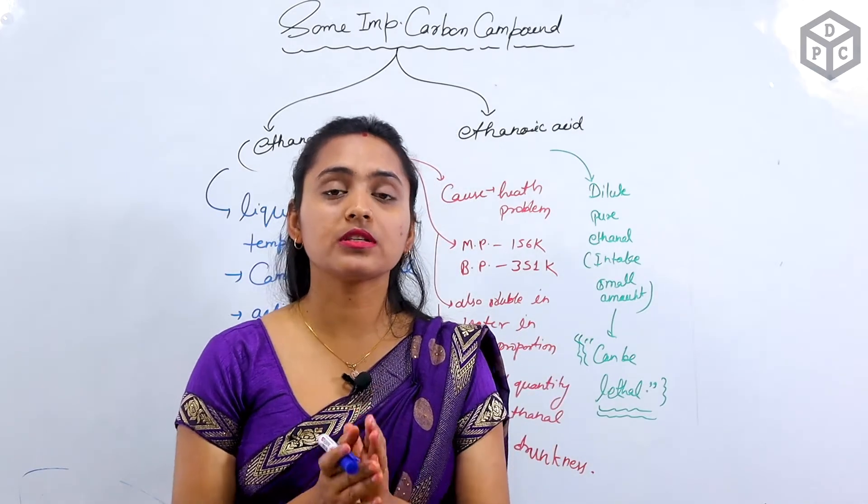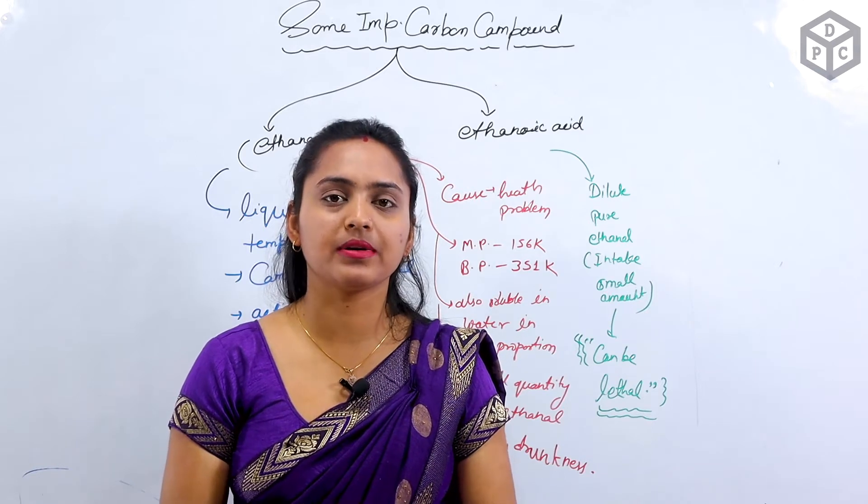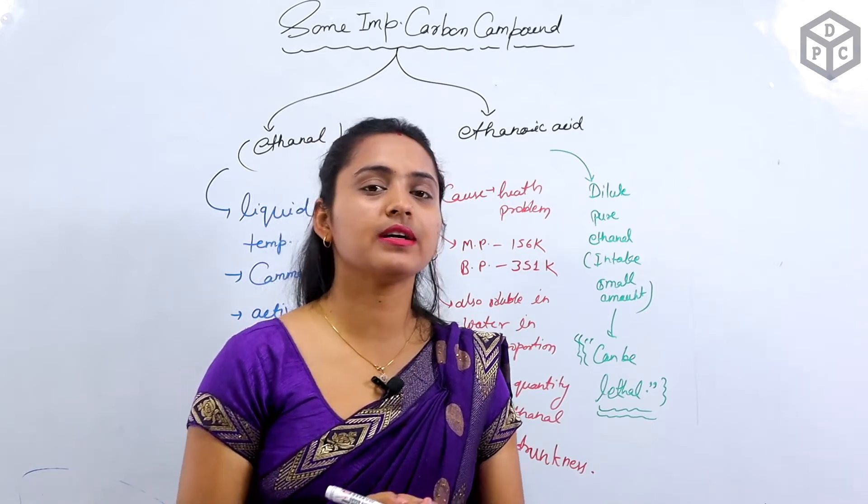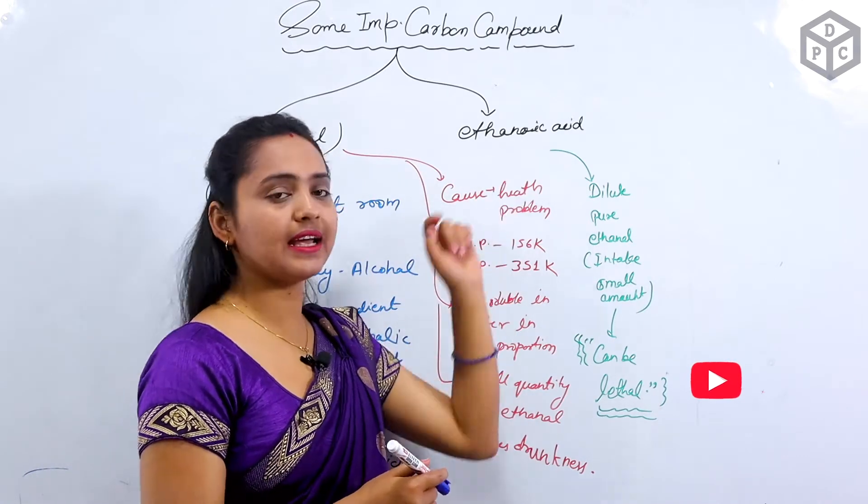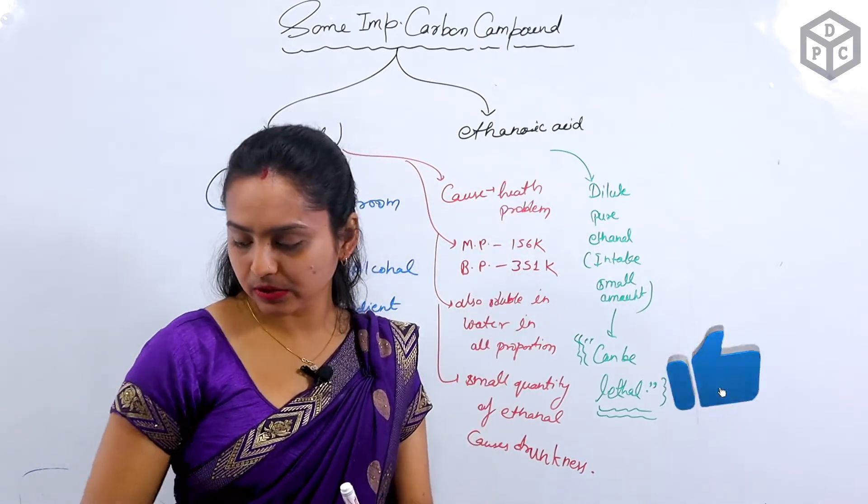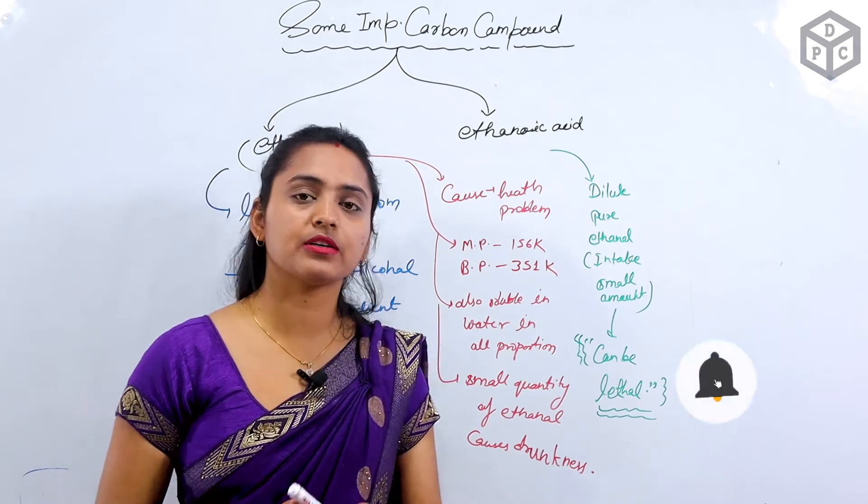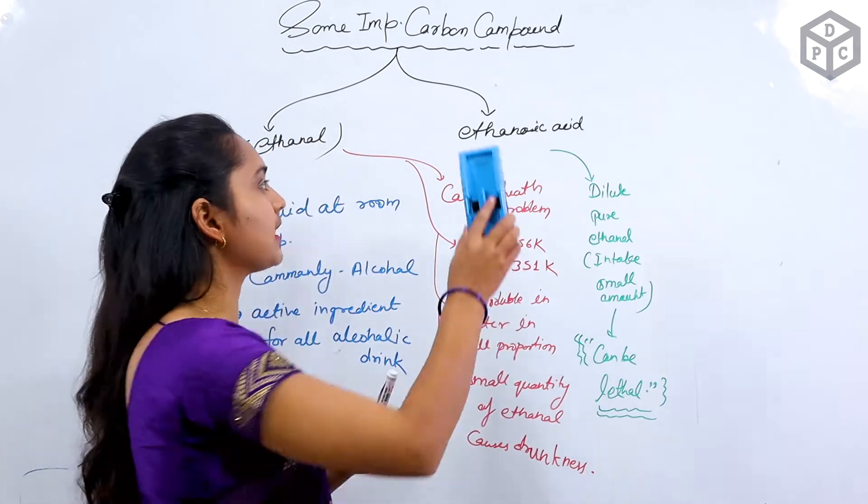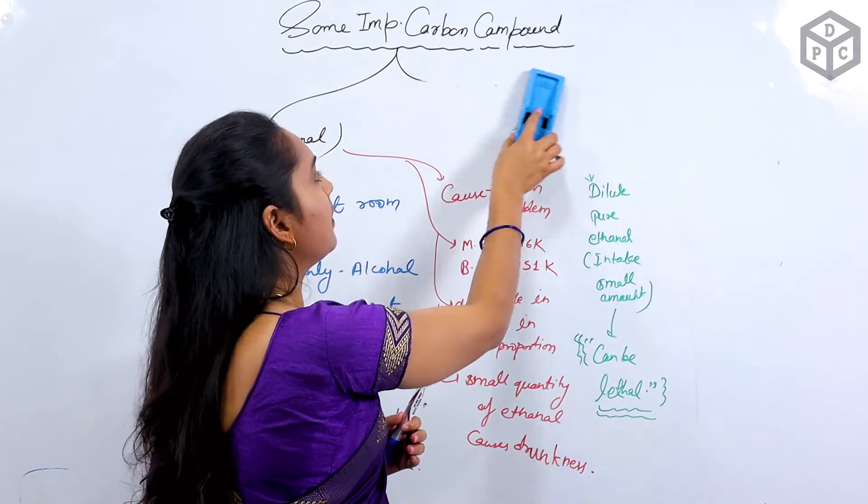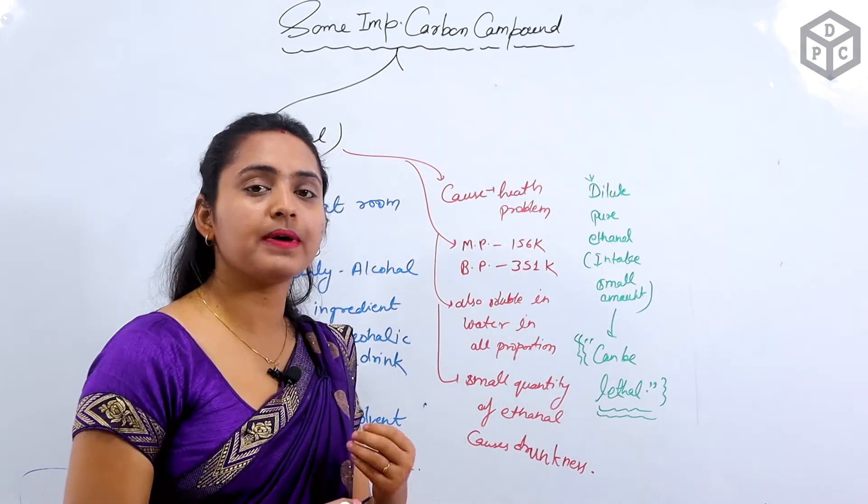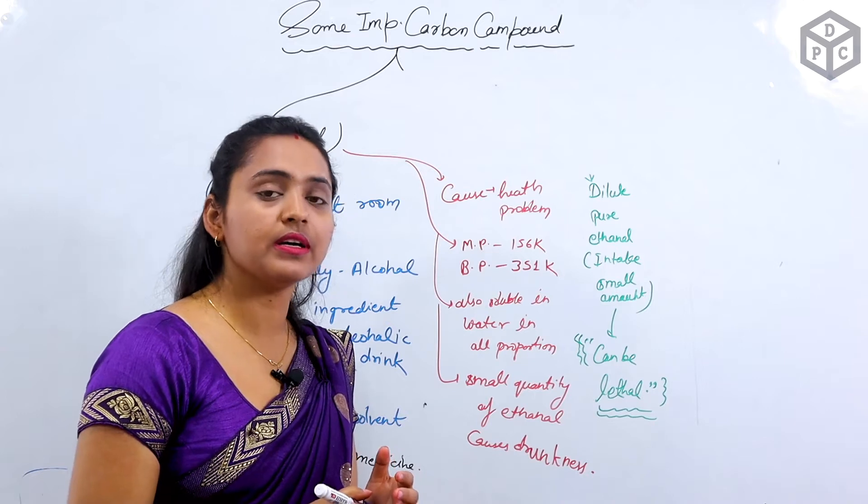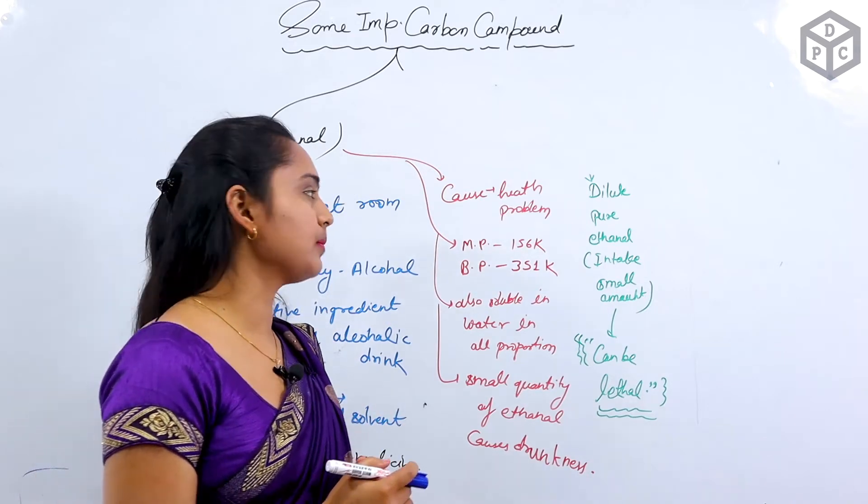Today I will tell you about some important carbon compounds. There are two carbon compounds that we need to study here. First is ethanol, second is ethanoic acid. If you study this in this lecture, it will be much bigger, so we will study it in the second lecture. Now let's see some properties of ethanol. Why is it so important? We will study it in this lecture.